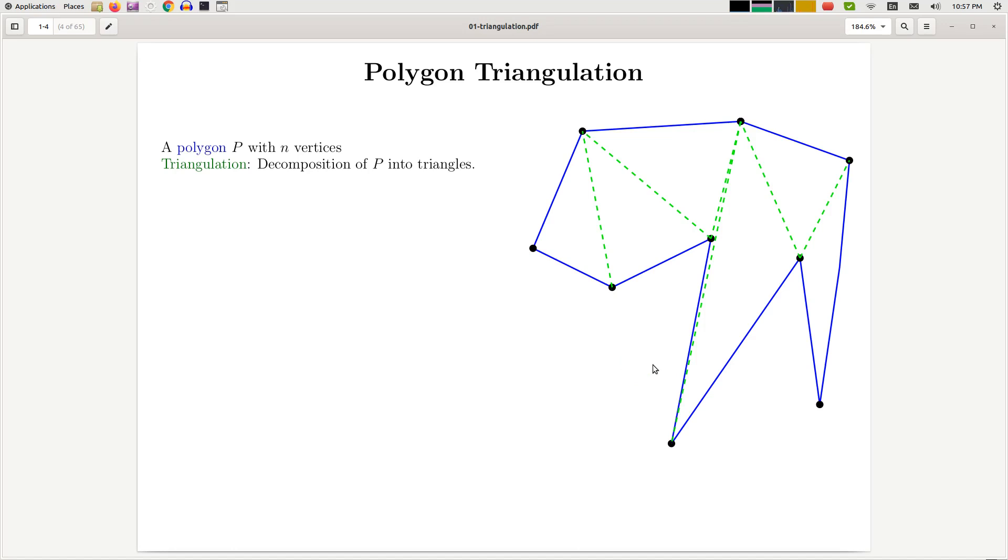Given a polygon with n vertices, how can we decompose this into triangles? The reason we want to do this is because it's much easier to treat a polygon as a collection of triangles rather than just an object with very complex structure. Many problems become much easier once we can do this decomposition.